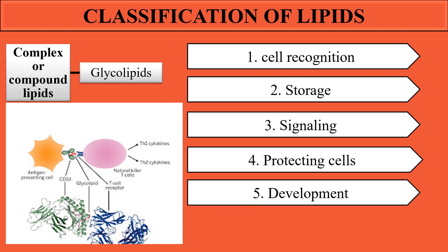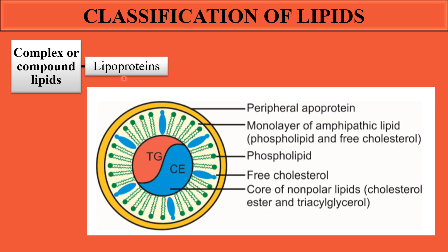The third and last form of compound lipids are lipoproteins. As the name indicates, they are made up of lipids combined with proteins, where the protein is known as apoprotein. Lipoproteins act as transport vehicles that carry lipids surrounded by proteins. They are used for absorption purposes and are transported in the blood. In lipoproteins, triglycerides, cholesterol, free cholesterol, and phospholipids form layers surrounded by apoprotein, and are then transported throughout the body.